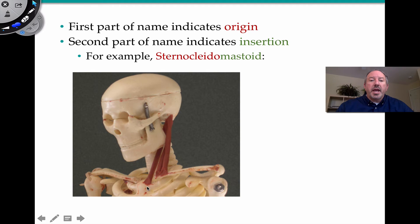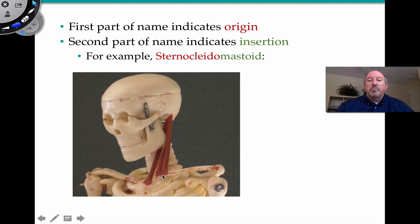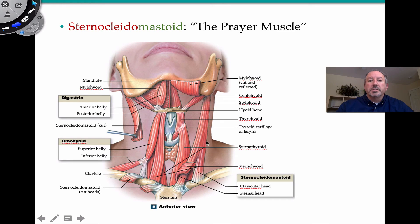Another cool example is in your neck. There's a prominent muscle called the sternocleidomastoid. Its insertion is at the mastoid process of the temporal bone, and its origin is in two locations: the manubrium of the sternum and the medial part of your clavicle. This muscle is sometimes referred to as the prayer muscle because it enables us to lift our head up and down like that.